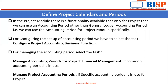In the project module, there is a special functionality available only for project — we can use an accounting period other than the general ledger accounting period. It means in the project module, we can use a calendar other than the calendar used for the GL accounting period. For configuring this setup, we have to select the task that is 'Configure Project Accounting Business Function,' found in the function area Project Organization.